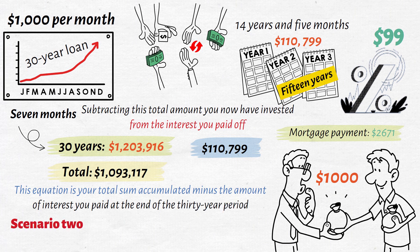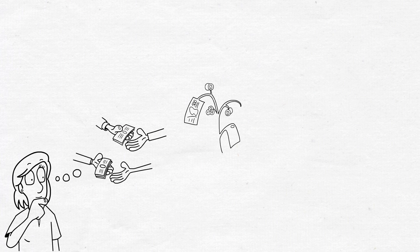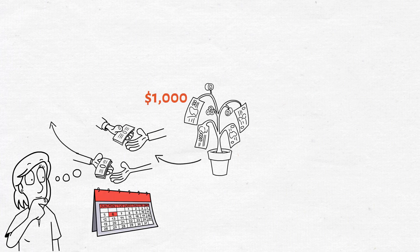Scenario 2: making the minimum payment and then investing. Let's assume you only pay the minimum payment on the mortgage and invest your extra $1,000 each month. By only paying the minimum payment, you'll have paid a whopping $250,544 in interest over 30 years, much more than in the first scenario.